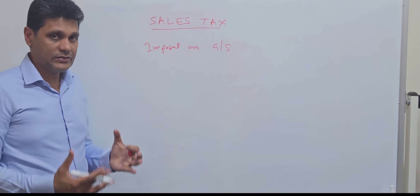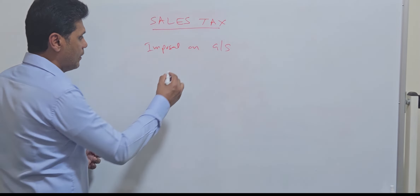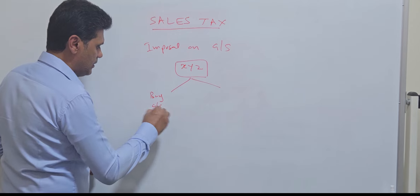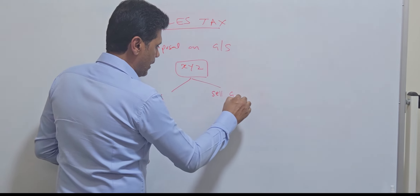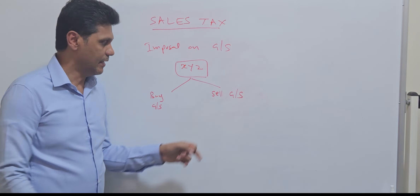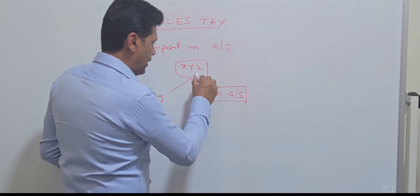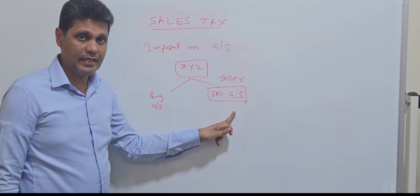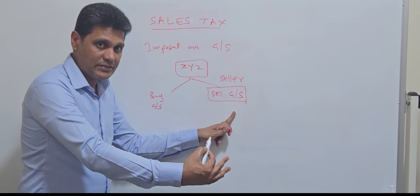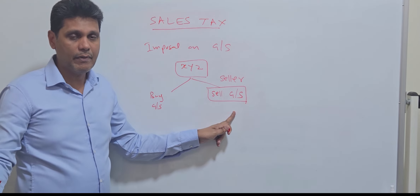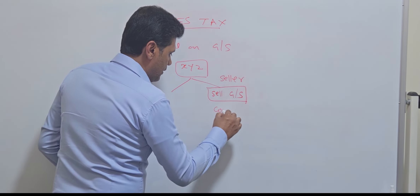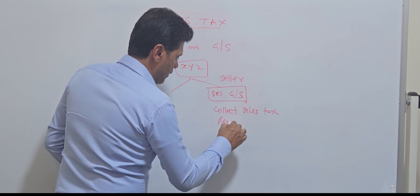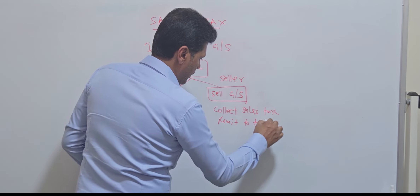So who collects these taxes? The sellers. Let's say there's a company called XYZ. This company will buy goods and services as well as sell goods and services. At the time of selling, XYZ company, as a seller, has to collect the sales tax from the customers, and that tax has to be remitted to the tax authorities.